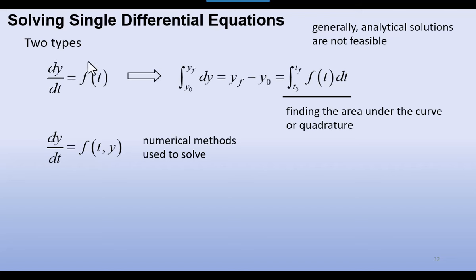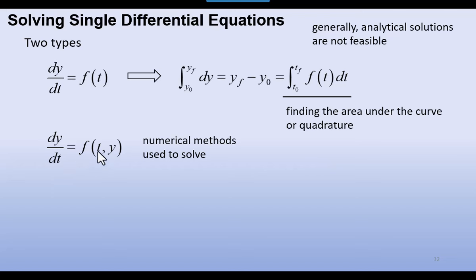The first type is where we have a derivative equal to a function only of the independent variable t. This is a problem that can be separated — we integrate the left side to get y_final minus y_initial, and the right side represents finding the area under a curve of f(t) from t0 to tf. In the second type, the derivative is a function of both the independent and dependent variable, and we use numerical methods to solve this.